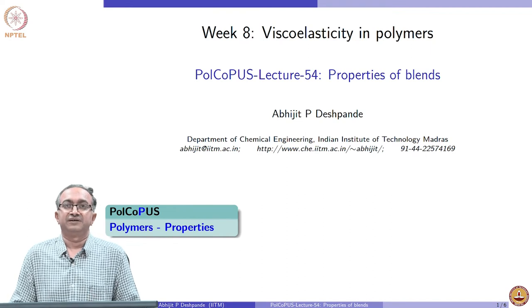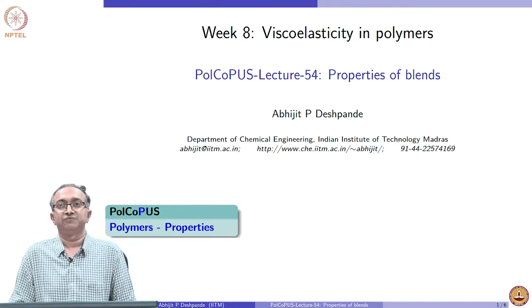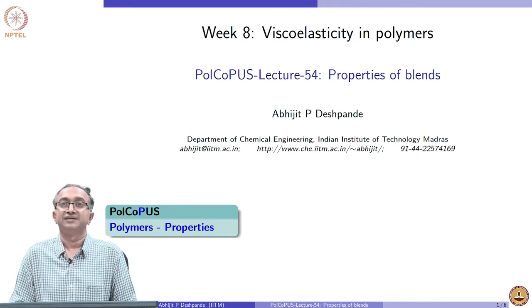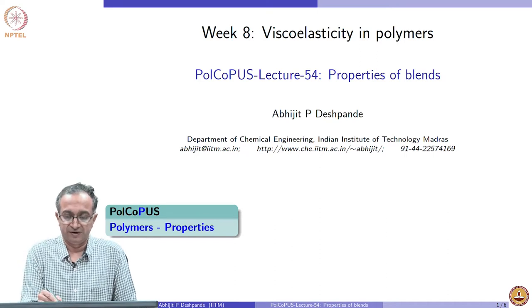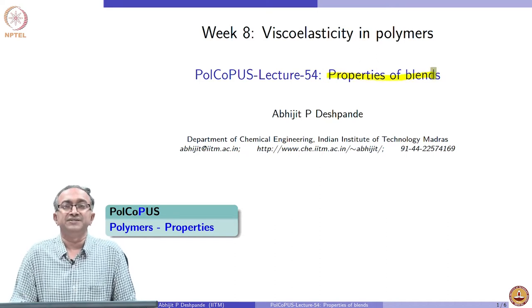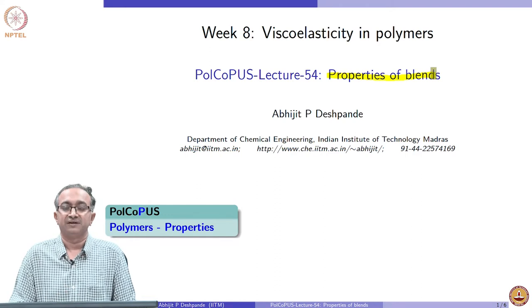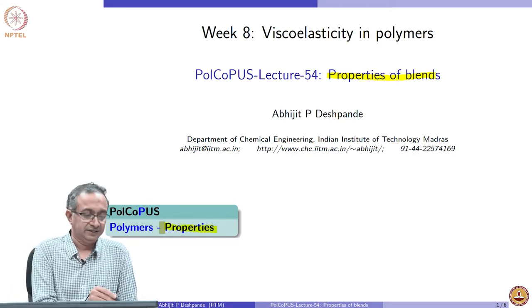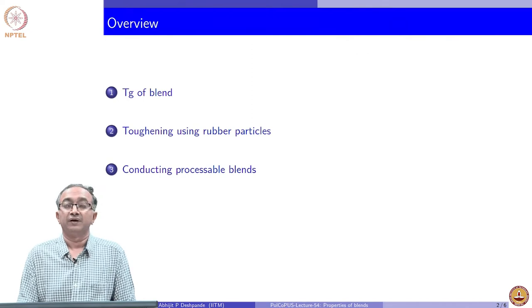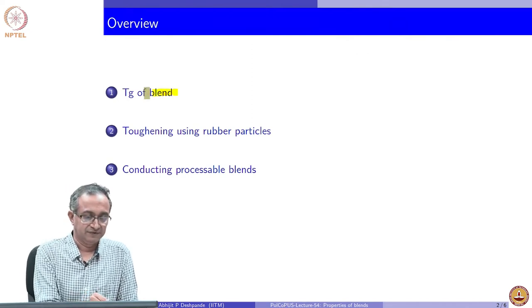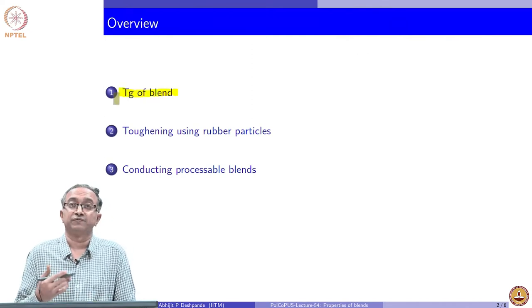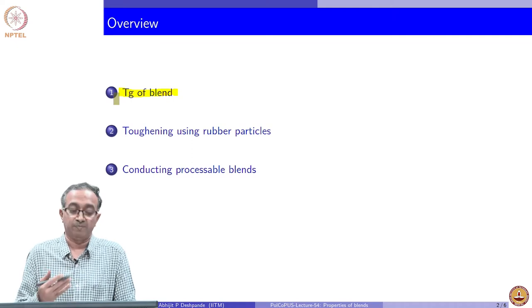Hello, welcome to another week of classes. In this eighth week, we are looking at viscoelasticity in polymers and we will focus on blends, some example properties that are relevant by looking at glass transition of the blend itself and how it varies as a function of whether it is partially miscible or completely miscible.